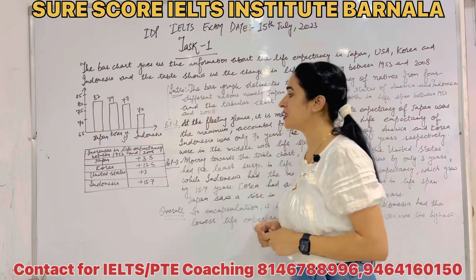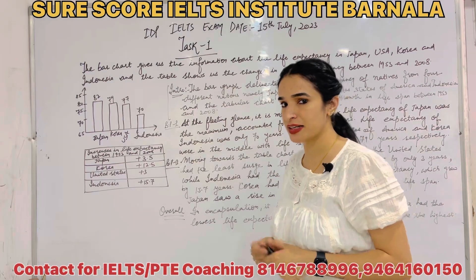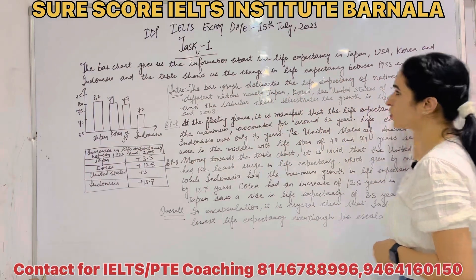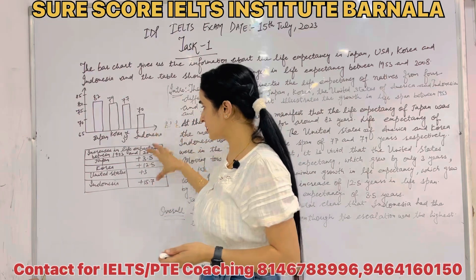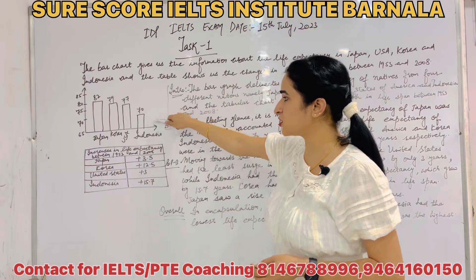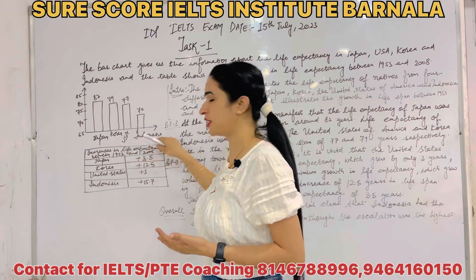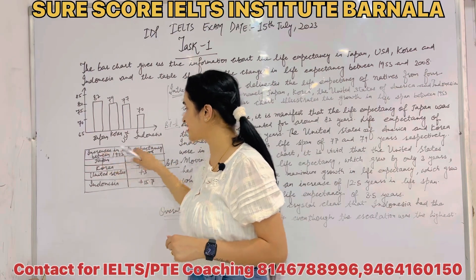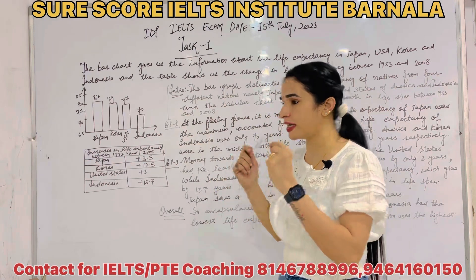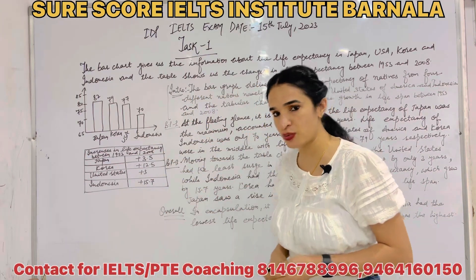Task 1 is going to be an exam question. We are going to discuss how best we can do this. We will start with the statement and understand it. The bar graph gives us information about the life expectancy in Japan, United States of America, Korea, and Indonesia. As you can see, two graphs are given here: number one is a bar graph, and number two is a tabular chart. The bar graph represents life expectancy in Japan, Korea, US, and Indonesia in 2008. The second one shows increases in life expectancy between 1953 and 2008.